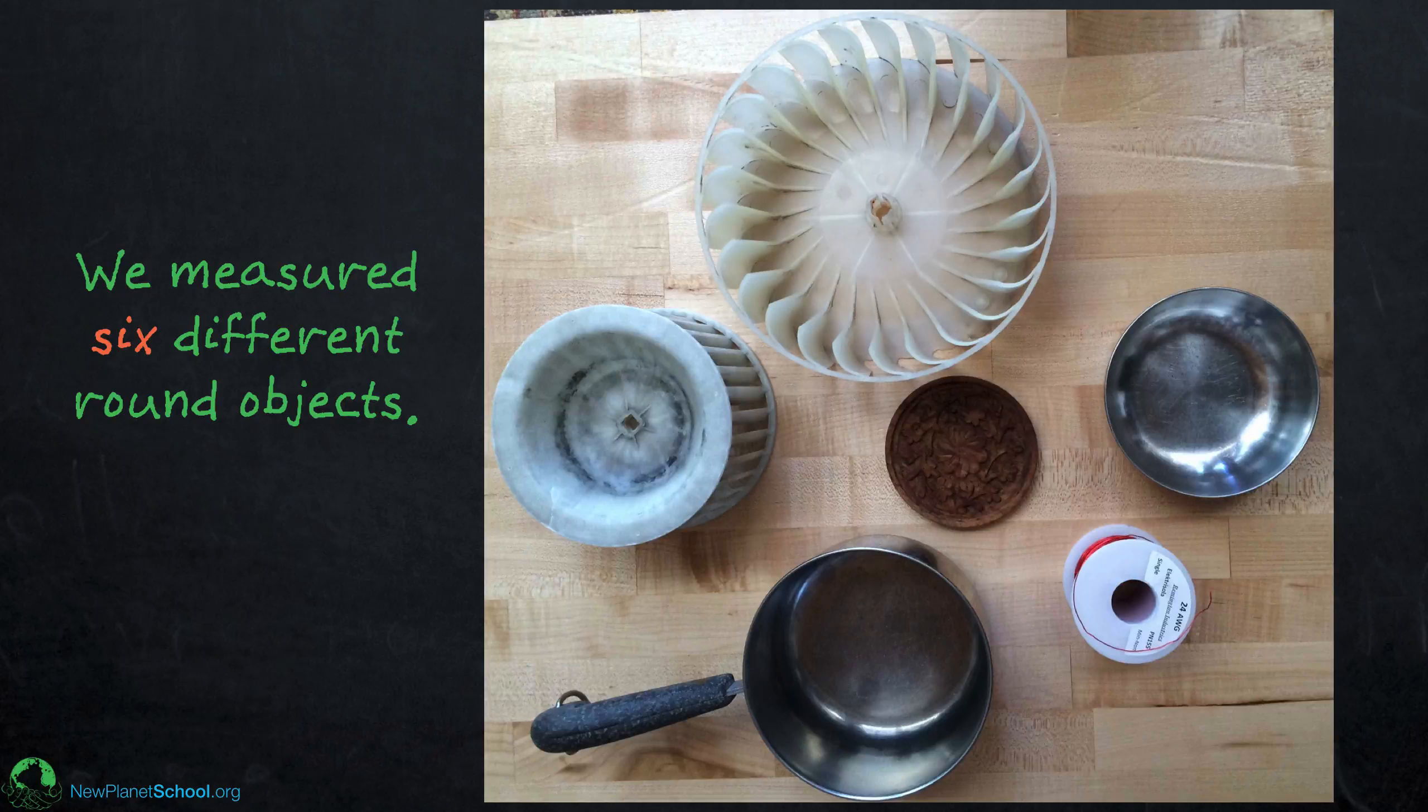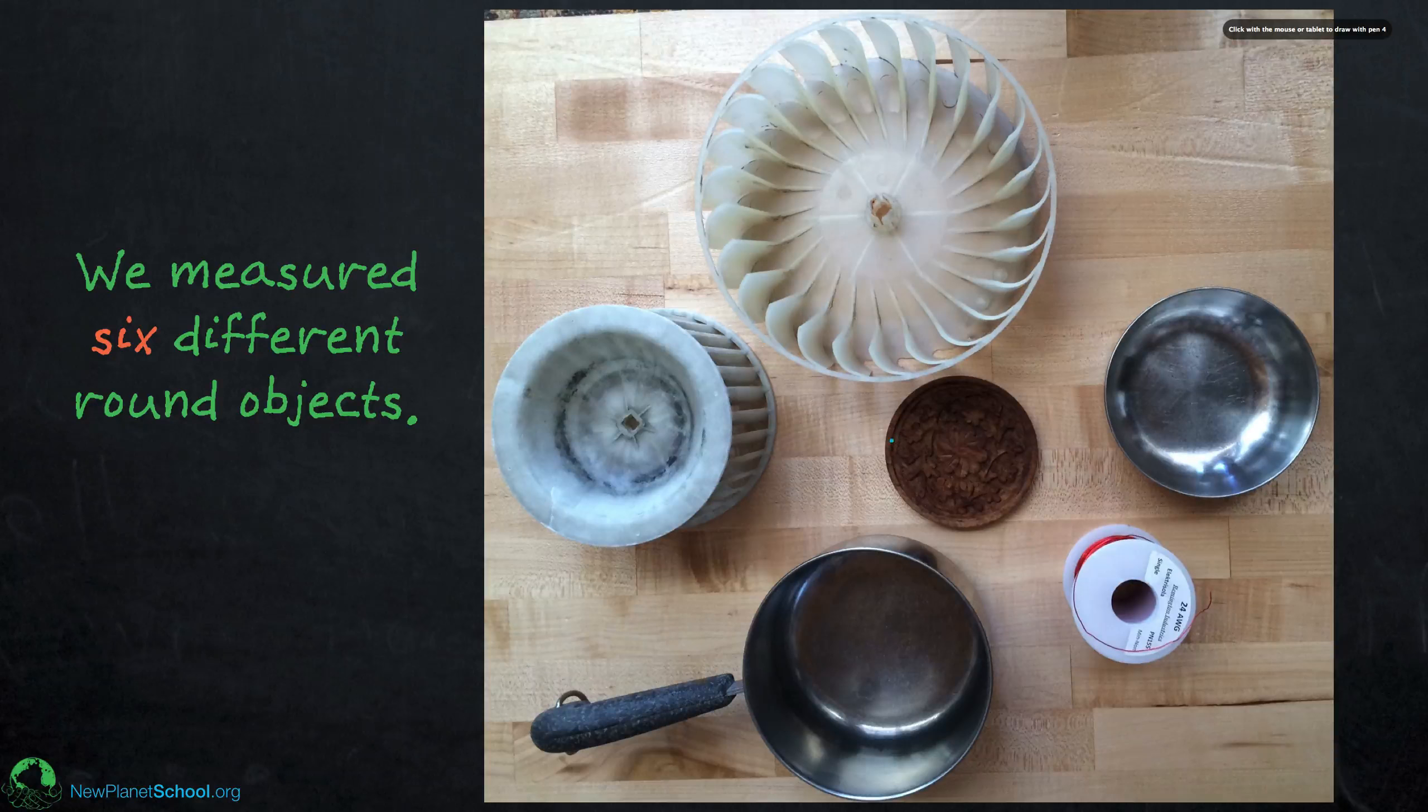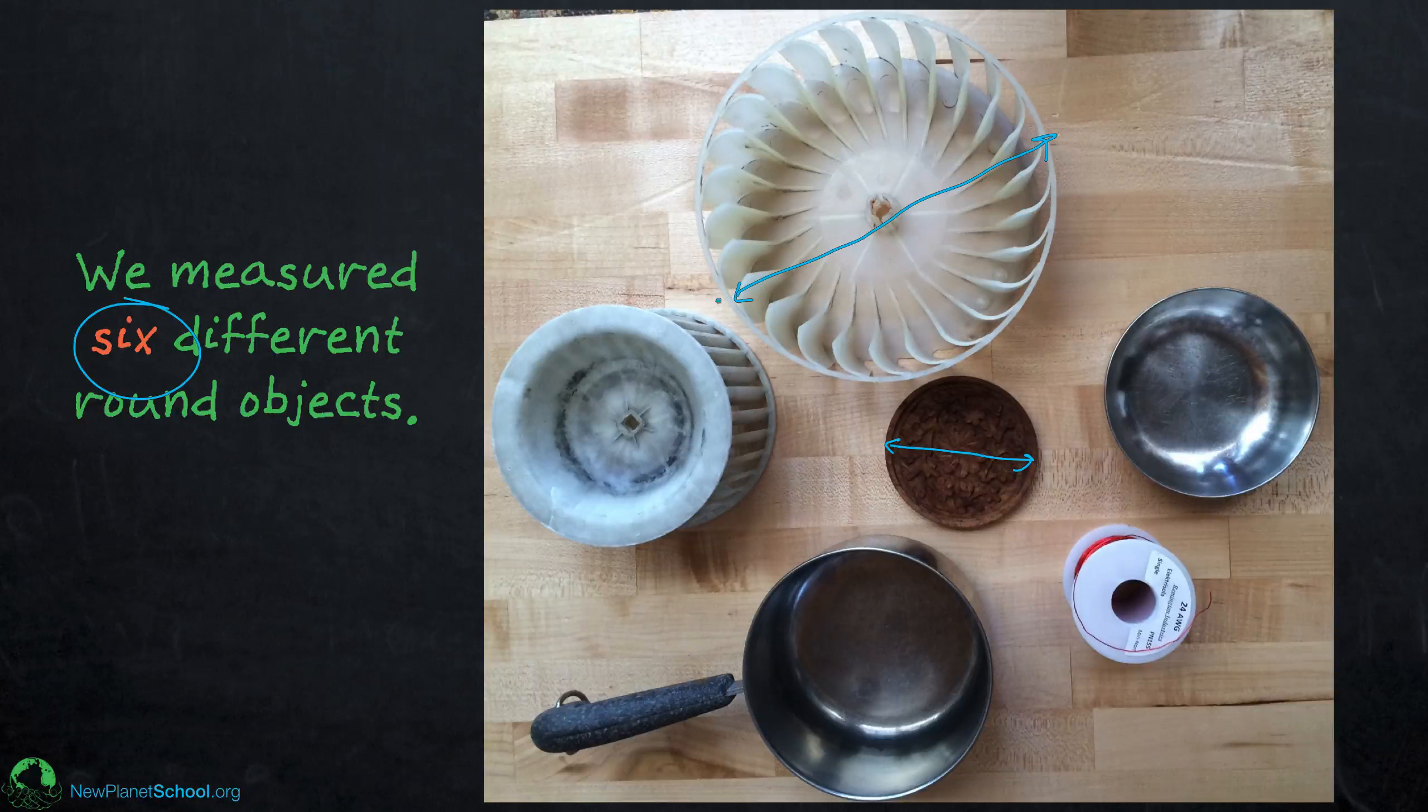So what we did is we walked around the house and we found six different objects. You can see here some of them have a small diameter, some of them have a large diameter, and we picked six of them and we simply measured the circumference to the diameter and divided them to see if we would get pi or not.